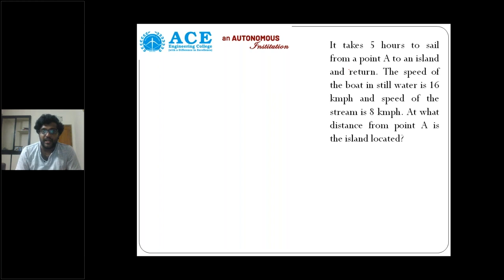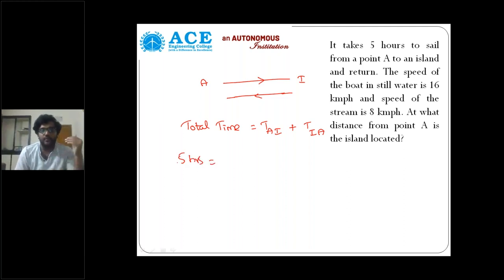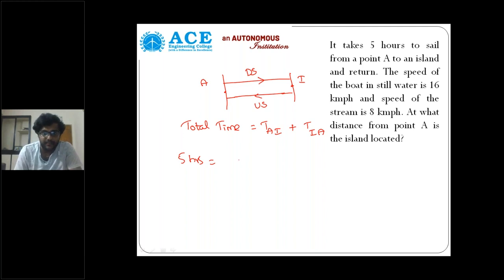It takes five hours to sail from point A to an island and return. Total time taken to move from A to island and island back to point A is five hours. One important point: when going A to island consider it downstream, and the return must be upstream. Distance is the same but downstream speed is speed of boat plus speed of stream, and upstream speed is speed of boat minus speed of stream.